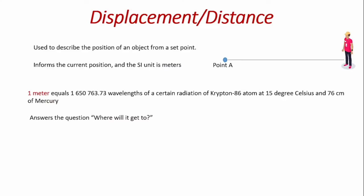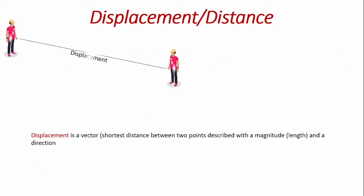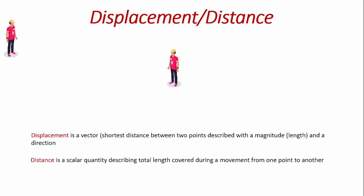And there's a difference between distance and displacement. Whereas displacement tends to be a vector quantity which is described as the shortest distance between two objects, distance usually has magnitude and direction. On the other hand, distance is a scalar quantity that describes the total length covered during movement from one point to another direction.